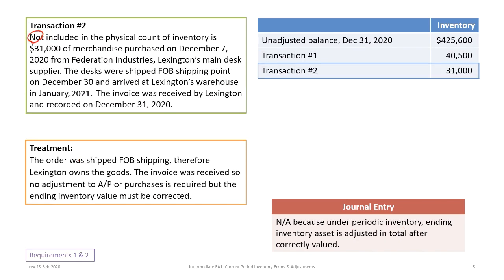For transaction two, not included in the physical count is $31,000 of merchandise purchased on December 7th. The desks were shipped FOB shipping point on December 30th and received at Lexington's warehouse in January. The invoice was recorded on December 31st. Accounts payable is okay, but inventory is not. FOB shipping point means Lexington takes possession as soon as the goods leave the supplier, so even though not yet received, they belong in Lexington's inventory. We must increase inventory by $31,000.